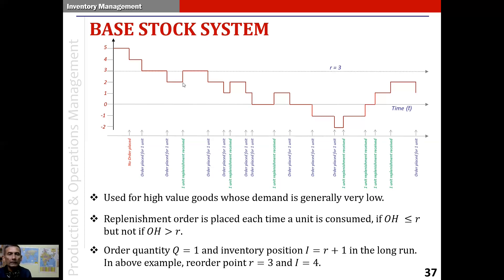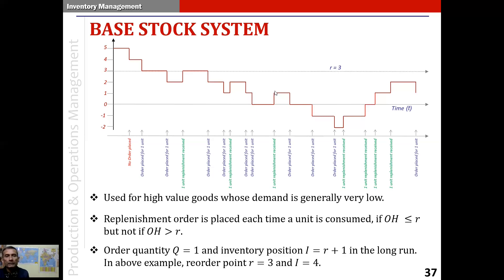When a replenishment arrives, the on-hand inventory goes back from 2 to 3, but the scheduled receipt decreases by 1 unit, again ensuring the inventory position remains at 4. The on-hand inventory keeps going up and down as consumption and replenishment happen, but the inventory position is always adjusted so it continues to remain at 4. This rule — that inventory position equals R plus 1 — is always fulfilled in the system in the long run.